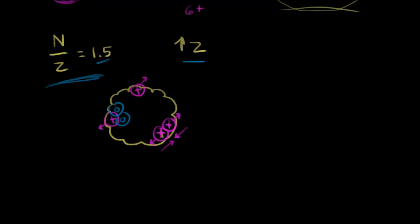Once you get an atomic number greater than 83 — bismuth — the electrostatic repulsive force of the protons is so great that pretty much all nuclei are unstable and will undergo radioactive decay. In the next video, we'll talk about the types of radioactive decay you might see.